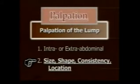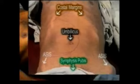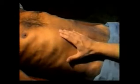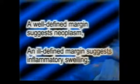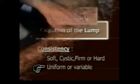Now proceed to palpate the lump in detail. First, identify the borders of the lump. Measure its size in centimeters using a measuring tape. Then note its location in relation to the quadrant involved and in relation to the costal margin, umbilicus, anterior superior iliac spine, or symphysis pubis. Then note its shape, surface, and margin. A well-defined margin suggests neoplasm, while an ill-defined margin is a feature of an inflammatory swelling. Then note the consistency of the swelling — whether it is soft, cystic, firm, or hard. The consistency may be uniform throughout or variable, different in different parts of the swelling.